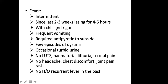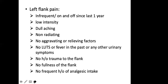The fever is intermittent, present for the last two to three weeks, lasting four to six hours when it comes, accompanied by rigors and vomiting, requiring antipyretics to subside. There are a few episodes of dysuria, occasional turbid urine, no LUTS, no hematuria, no lithuria, no recurrent fever in the past. The left flank pain is off and on for the last one year, not a definitive frequency, of low intensity, lacking in nature, non-radiating, no aggravating or relieving factors, no history of trauma or fullness of flank.